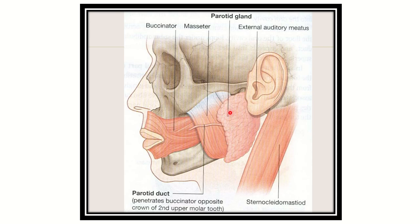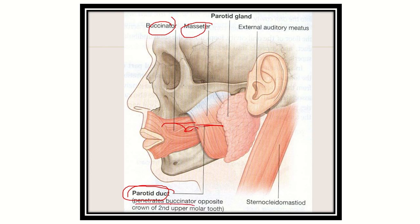In this third picture, it is very clear that the parotid duct overlies the masseter muscle and then pierces the buccinator muscle, opening into the mouth. It penetrates the buccinator muscle opposite the crown of the second upper molar tooth.